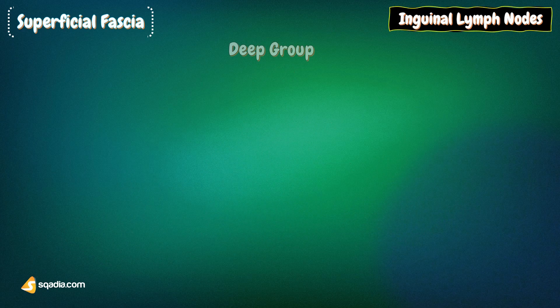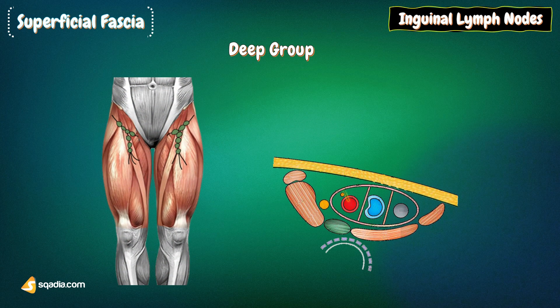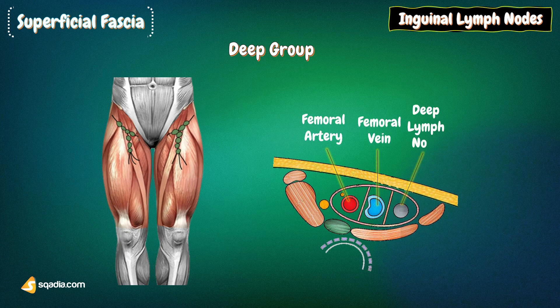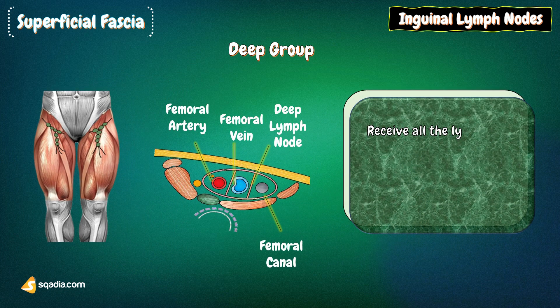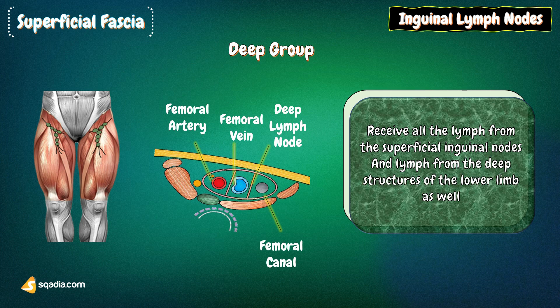The deep inguinal lymph nodes are located beneath the deep fascia and lie along the medial side of the femoral vein. The efferent vessels from these nodes enter the abdomen by passing through the femoral canal to lymph nodes along the external iliac artery. The deep inguinal lymph nodes are variable in number, and the most superior is usually located in the femoral canal. They receive all the lymph from the superficial inguinal nodes via lymph vessels that pass through the cribriform fascia of the saphenous opening, and also receive lymph from the deep structures of the lower limb, some having passed through the popliteal nodes.